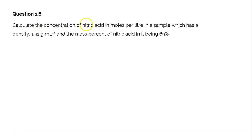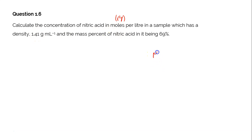Let's read the question. Calculate the concentration of nitric acid in moles per liter — which is nothing but molarity — in a sample which has a density of 1.41 grams per ml and the mass percent of nitric acid in it is 69 percent. We already know the formula of molarity is n by V, which is number of moles of solute by the volume of the solution, and the units are moles per liter.